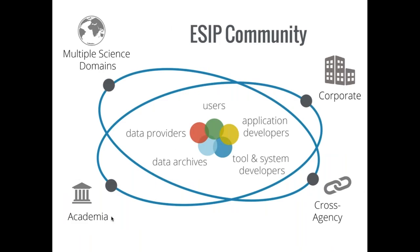ESIP as a community comes together across the data life cycle — from data repositories, researchers, and application and tool developers — and across earth science and environmental science domains and sectors. Academic, industry, and agency partners all come together around common issues they identify as a community. It's a very grassroots effort, identifying hurdles and impediments to using earth science data effectively. They implement agreements and learning at their home institutions.